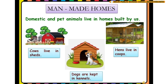Man-made homes: domestic and pet animals live in homes built by us. For example, cows, dogs, and hens stay in man-made homes. Cows live in sheds, dogs are kept in kennels, and hens live in coops.